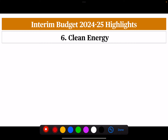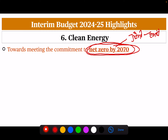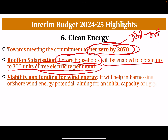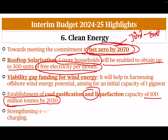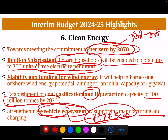The last sector for today's session is clean energy, working towards the commitment to net zero by 2070. Net zero means that the amount of emissions we are producing is equal to what we are reabsorbing. Next is rooftop solarization — 1 crore households will be enabled to obtain up to 300 units of free electricity per month. Viability gap funding for offshore wind energy has already been discussed. There will also be establishment of coal gasification and liquefaction capacity of 100 million tons by 2030. Finally, the e-vehicle ecosystem will be strengthened through the FAME scheme, supporting manufacturing and charging infrastructure.